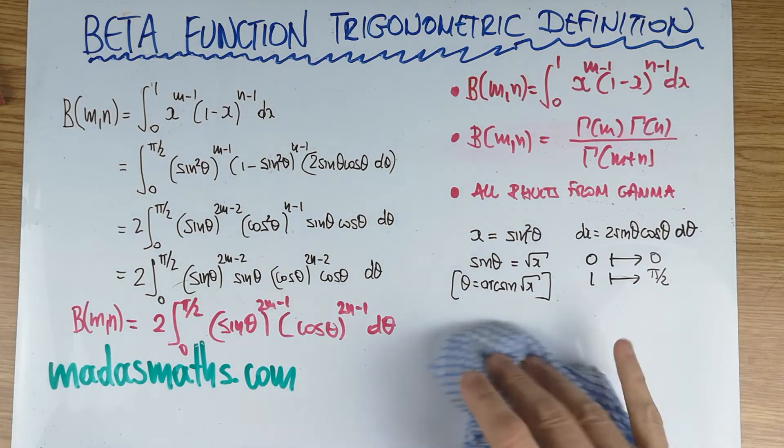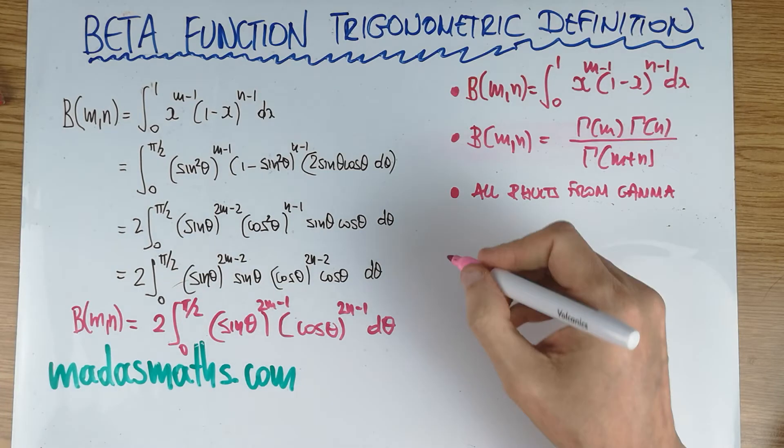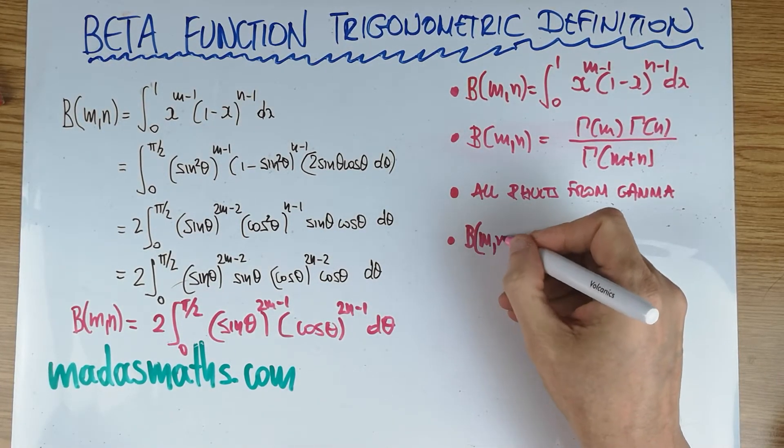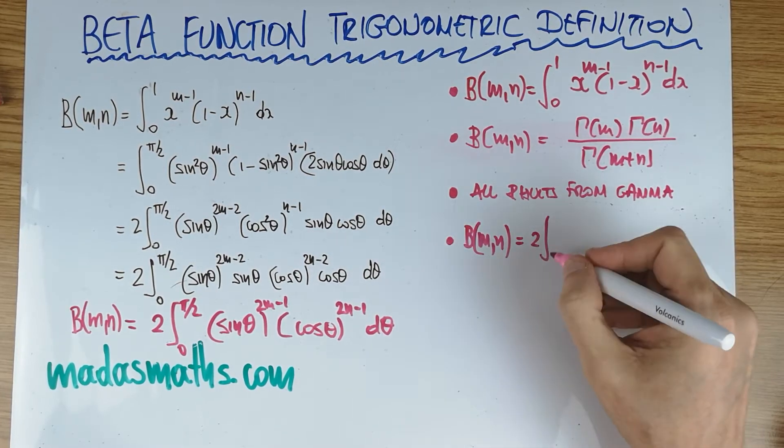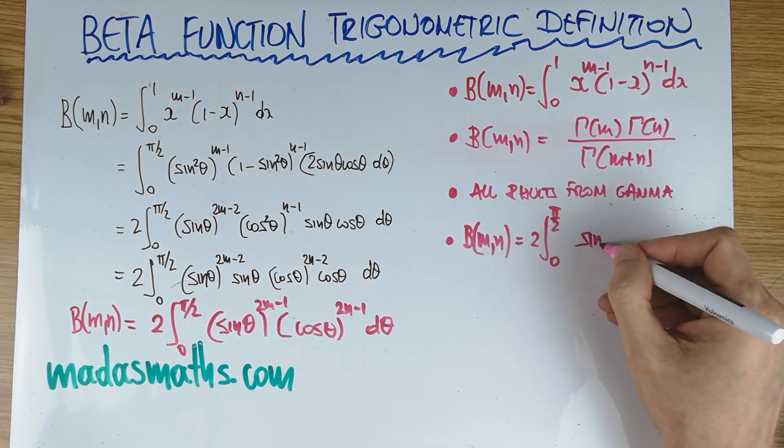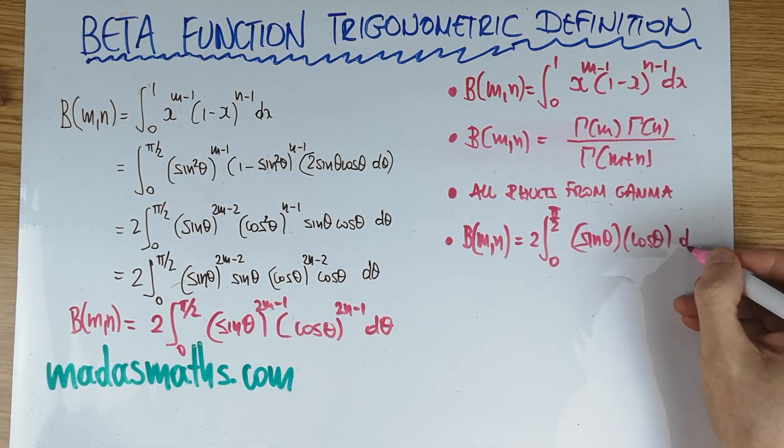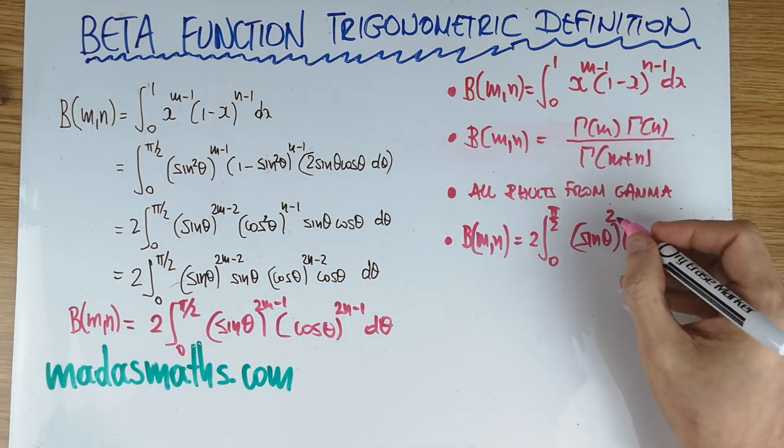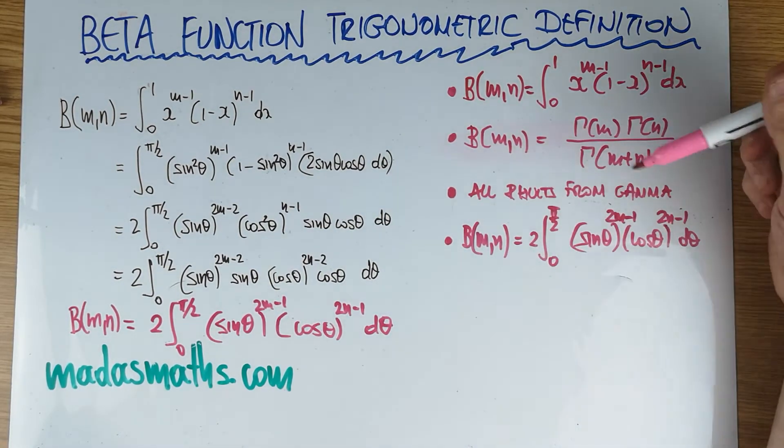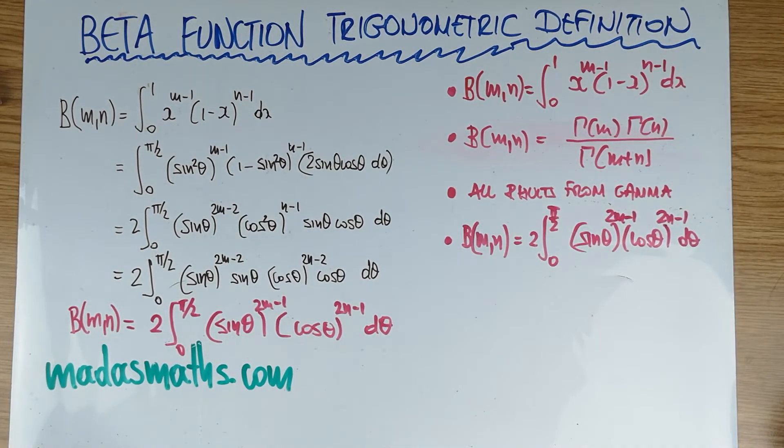Let me write it on the side here. Beta of m, n is 2 lots, 0 to pi over 2, sine theta, cosine of theta with respect to theta. Notice the difference, so we don't make a mistake between the two definitions. m minus 1, n minus 1, but here's 2m minus 1 and 2n minus 1.